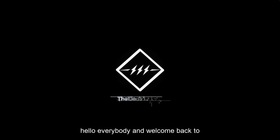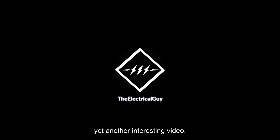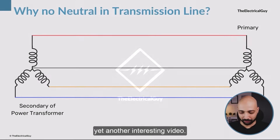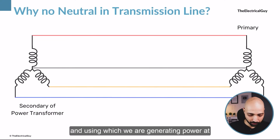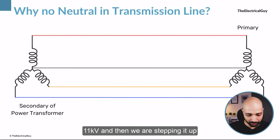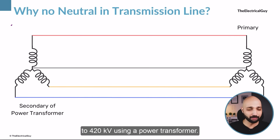Hello everybody, and welcome back to yet another interesting video. Let us say we have a generating station, using which we are generating power at 11kV, and then we are stepping it up to 420kV using a power transformer.